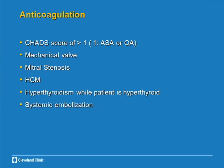So we use the CHADS score: congestive heart failure gets one point, hypertension gets one point, age gets one point, diabetes gets one point, and prior stroke or systemic embolization gets two points. We add them up, and if the total score is two or above, these patients need anticoagulation.